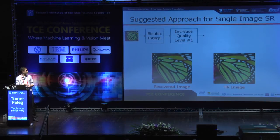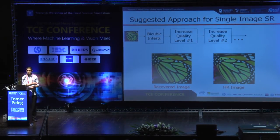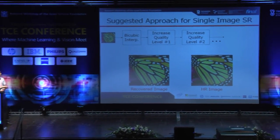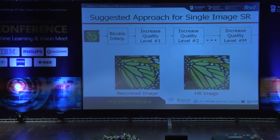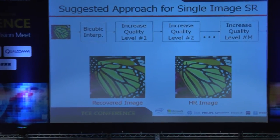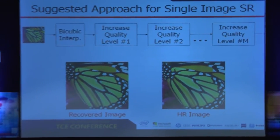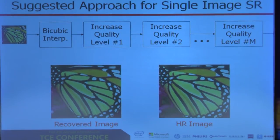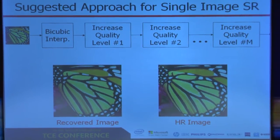After one level, this is the result we get. After two levels, this is the result. Three levels and four levels. At the end of the scheme, this is the result we get — high quality, very few artifacts.